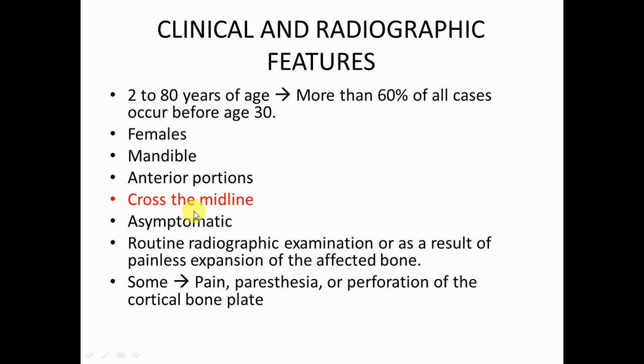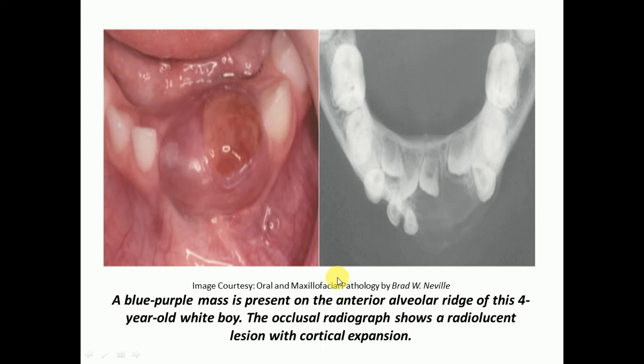Mostly it is asymptomatic, but in some cases it may show pain, paresthesia, or perforation of the cortical bone plate. Since it is mostly asymptomatic, it can be found on routine radiographic examination or as a result of painless expansion of the affected bone. Here we can see an image of the anterior part of the mandible — a blue-purple mass is present on the anterior alveolar ridge of a 4-year-old white boy. This occlusal view shows a radiolucency over the anterior part of the mandible consistent with central giant cell granuloma.